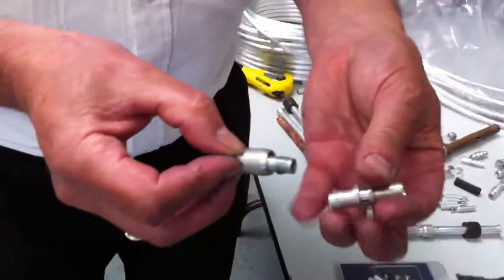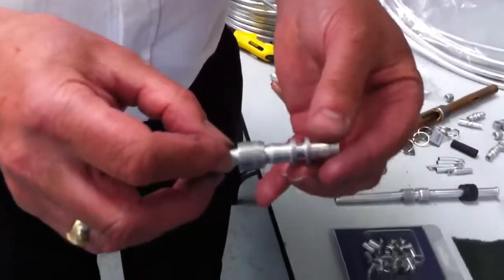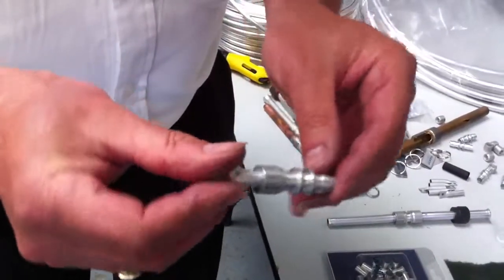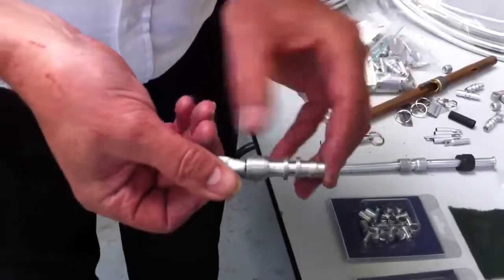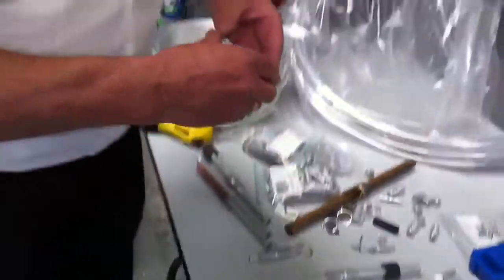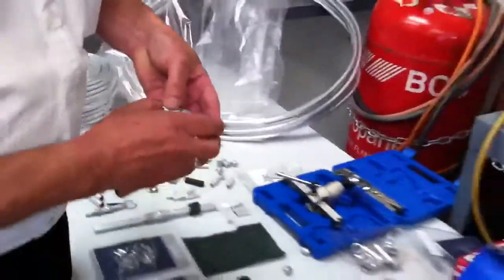So now what we do, we pop the tube into the connector, slide the collar along until we can see our reference starting point, and then take the hand tool. Sorry.